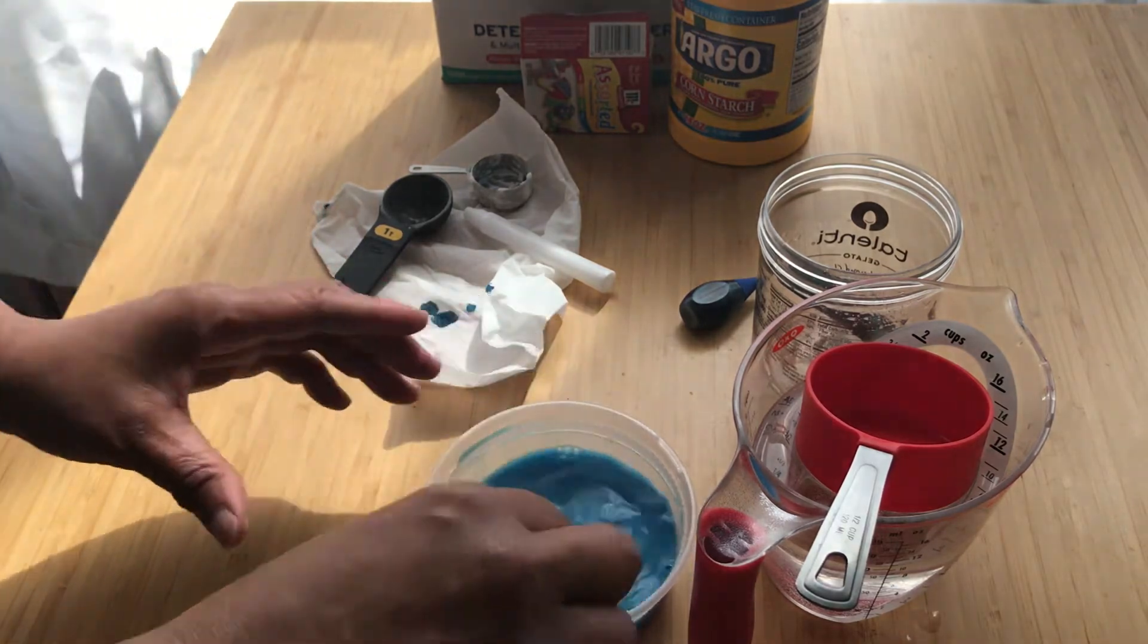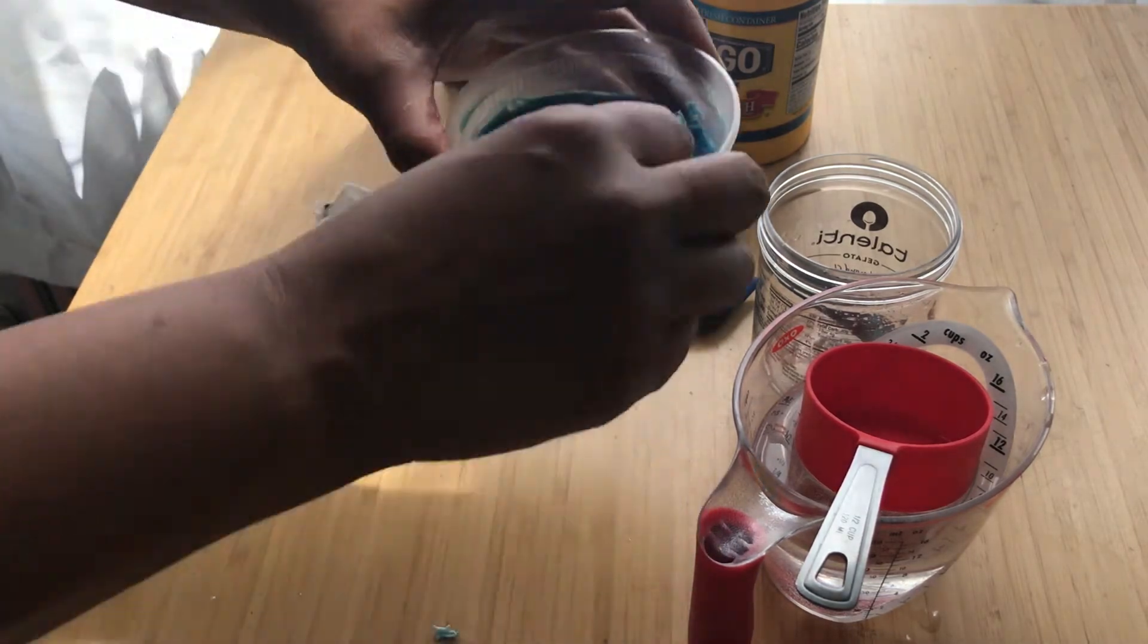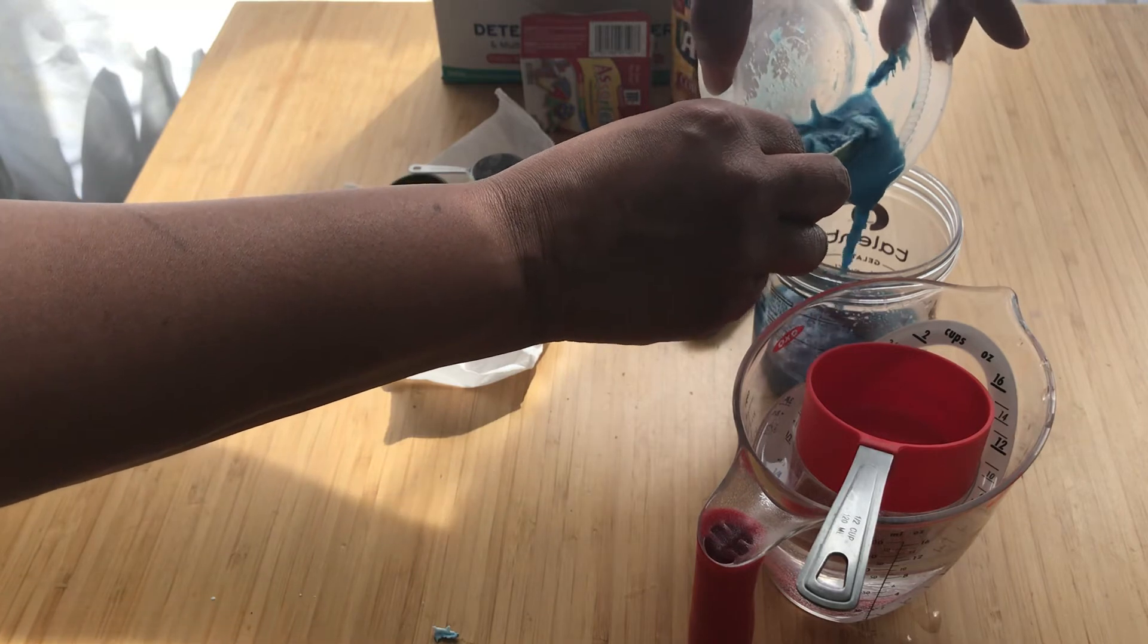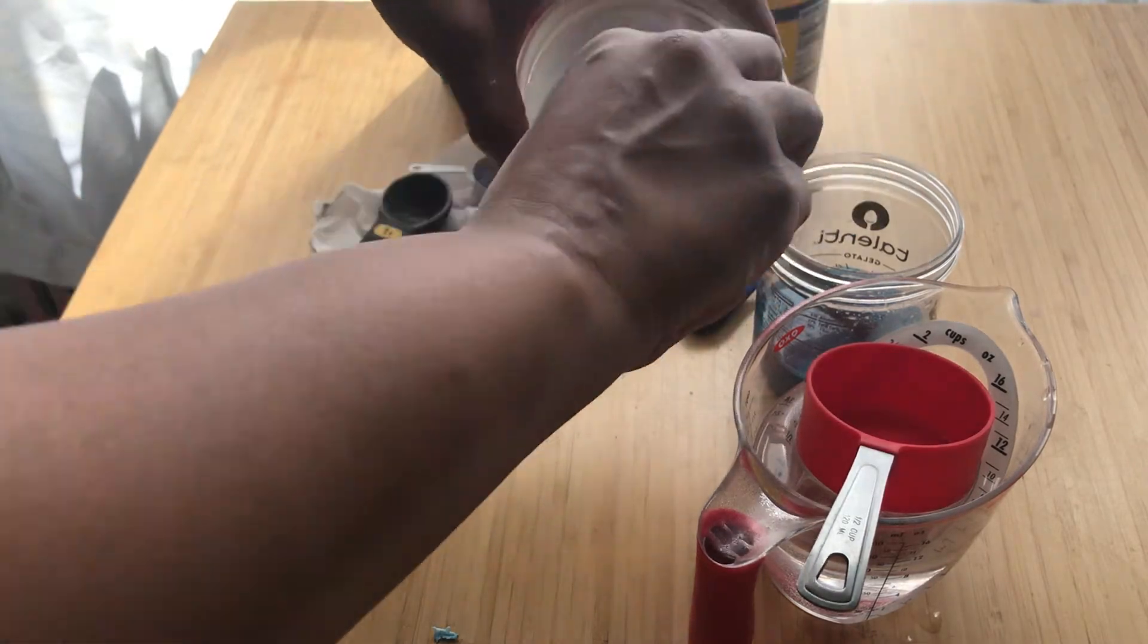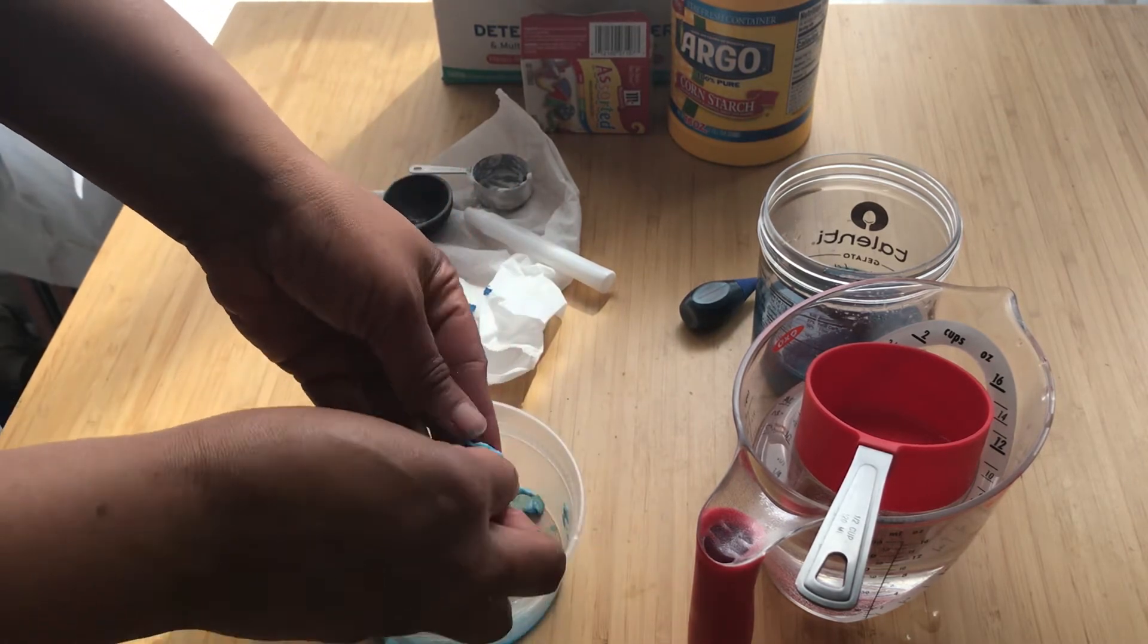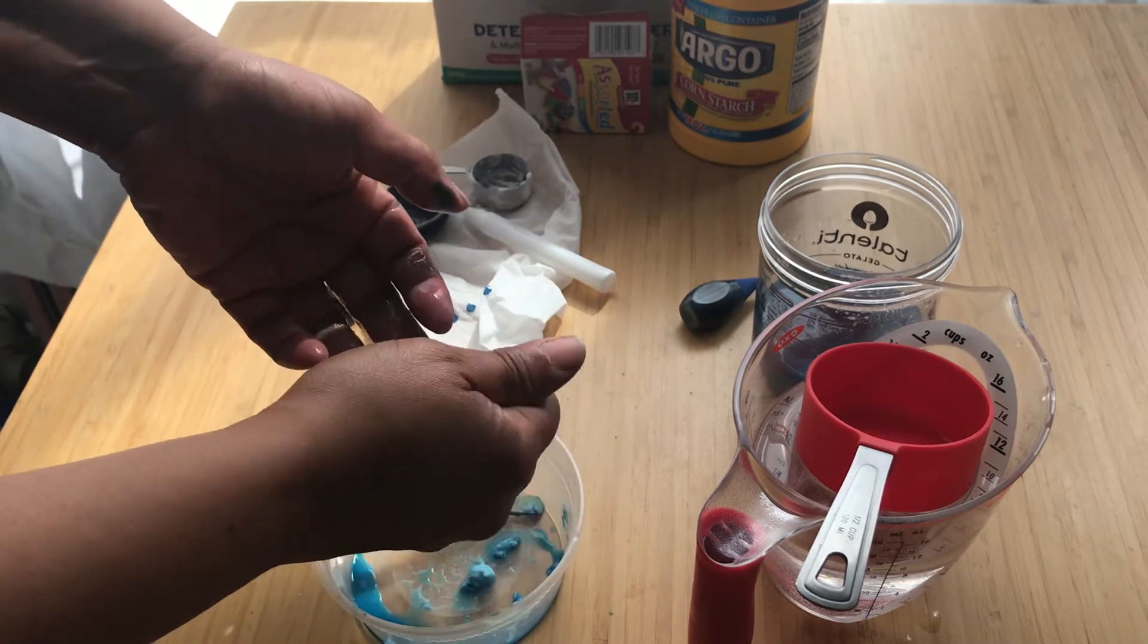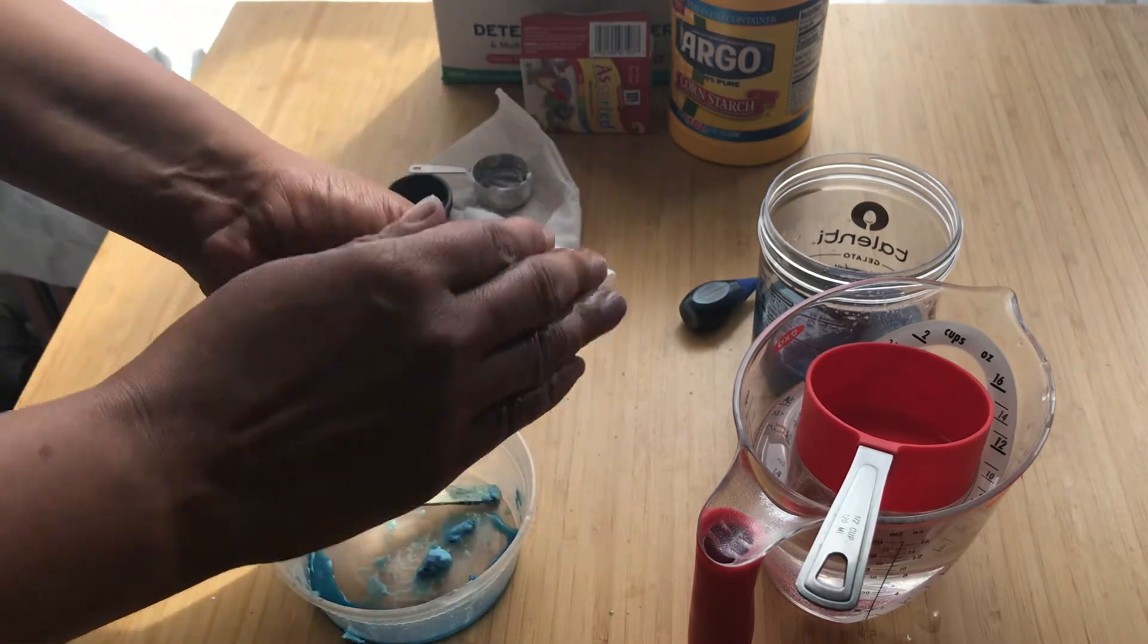And when you're done, you can pour off the liquid. And take your hardened glue and begin to form it, squeeze out the liquid, and you can begin to form it in the shape of a ball.